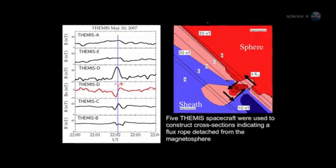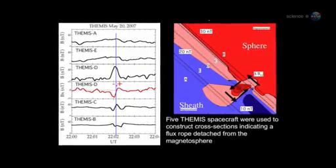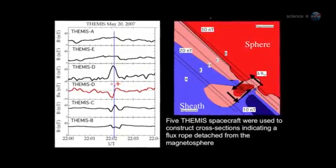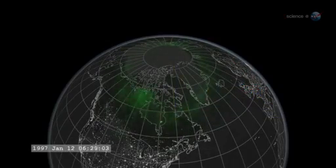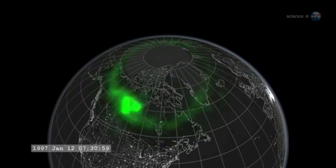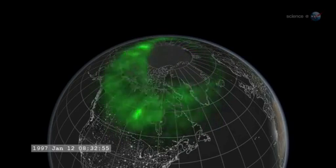Most portals are small and short-lived. Others are yawning, vast, and sustained. Energetic particles can flow through the openings, heating Earth's upper atmosphere, sparking geomagnetic storms, and igniting bright polar auroras.